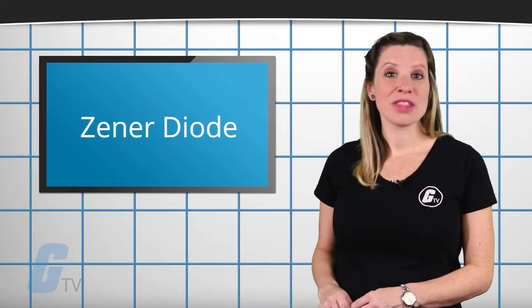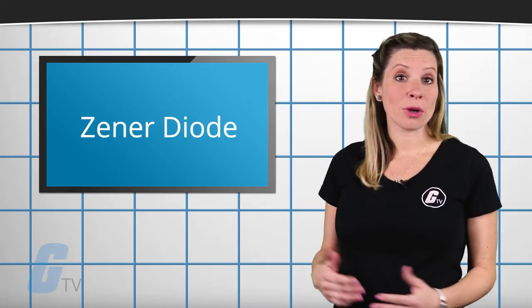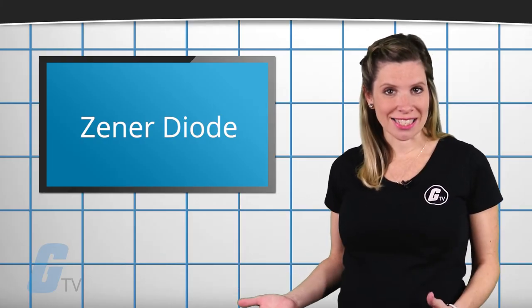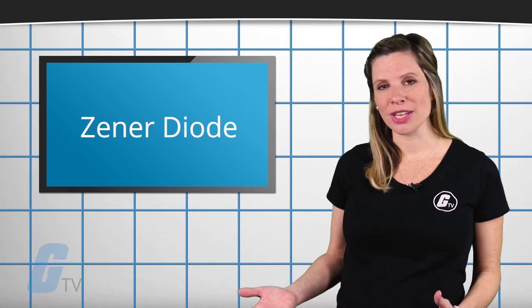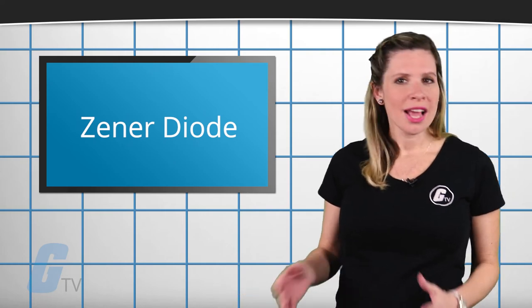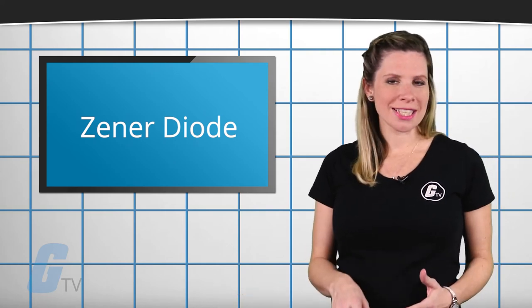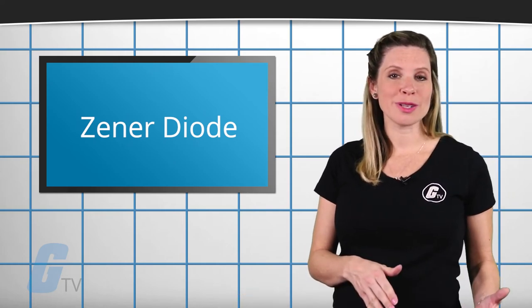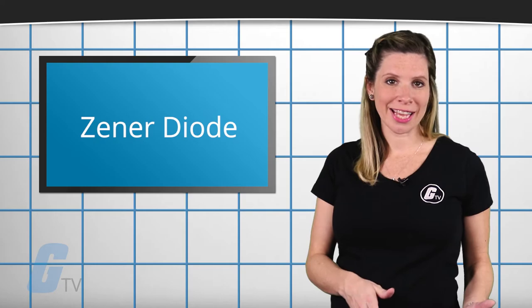Additionally, the voltage drop across the diode remains constant over a wide range of voltages, a feature that makes the Zener diode suitable for use in voltage regulation.